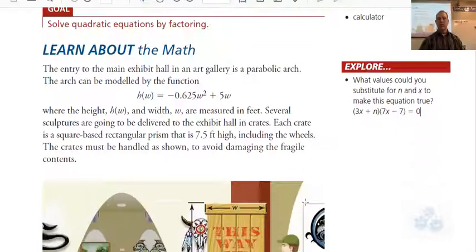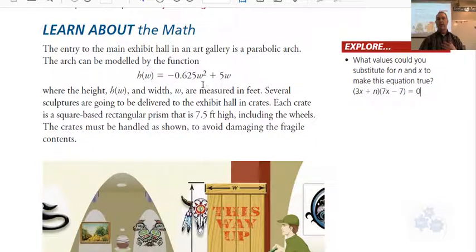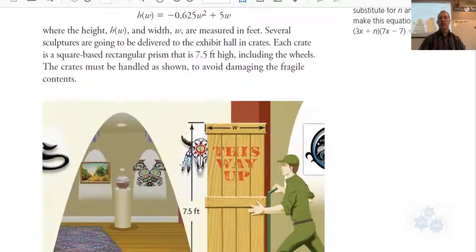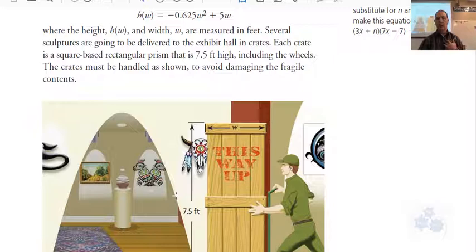We'll come back to something like this here real soon. But this is a type of question that we're going to be able to solve once we are able to factor the quadratic. So here's the problem - we've got a parabolic arch. This person needs to get some kind of statue or something that's in a crate, and they need to move this crate through the arch. Now the crate is 7.5 feet tall.